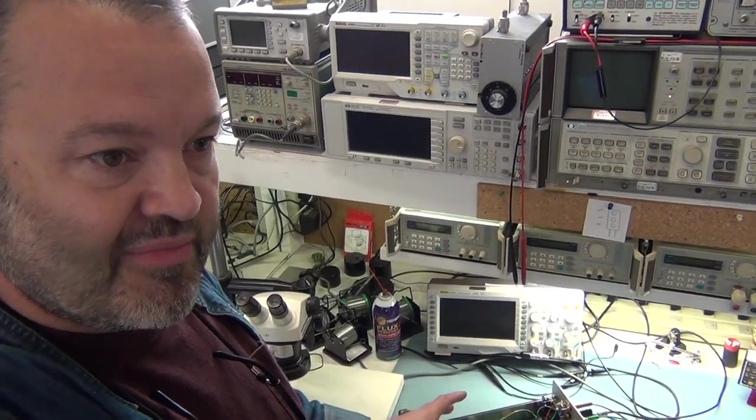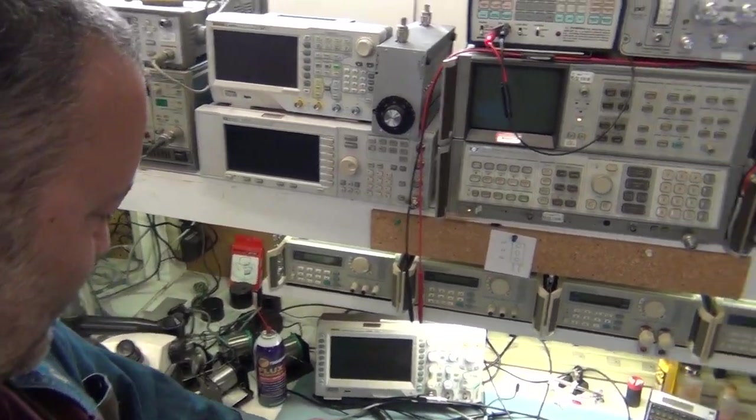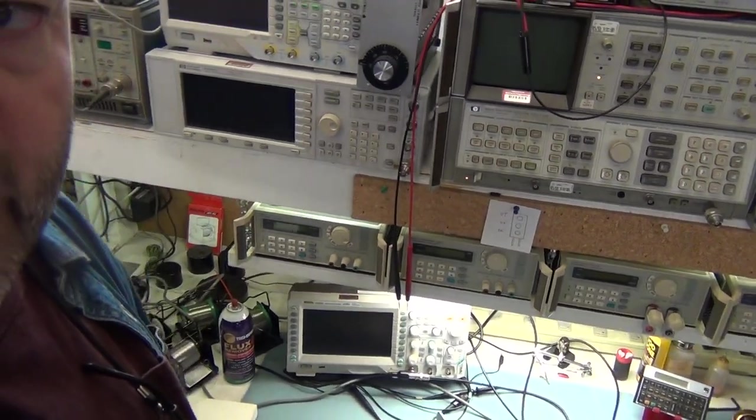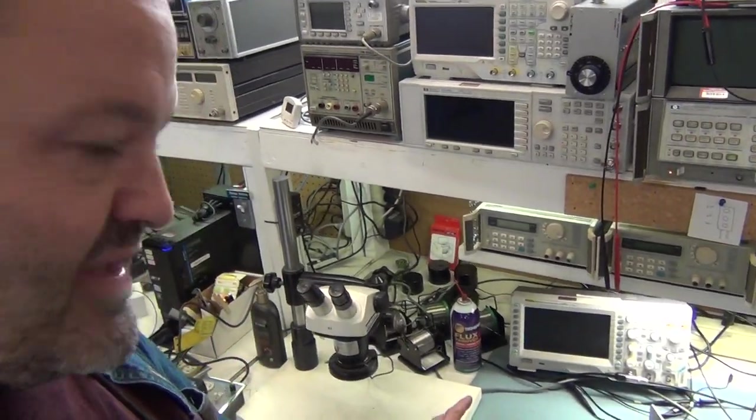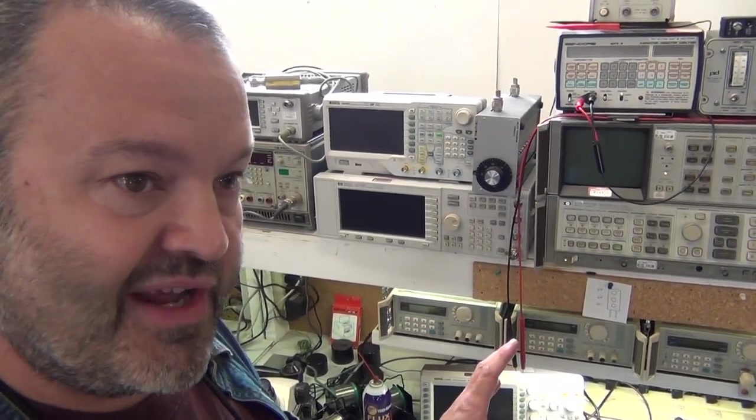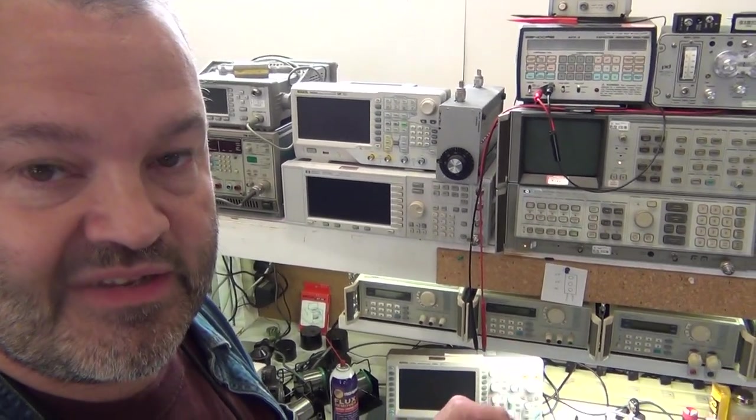The other thing to watch out for when you're calibrating these - there's a jumper back here that has to be in the calibration position to allow the calibration. You can cal these from the front panel. When you read the manual, it looks like you might need a GPIB program. You don't have to have that. It's pretty easy to calibrate these.